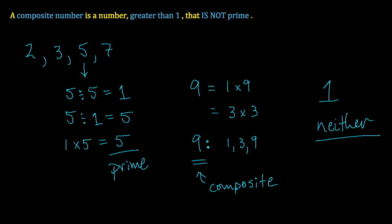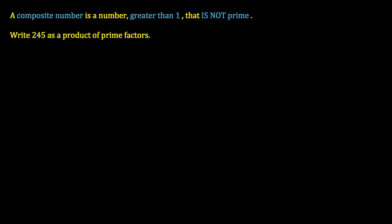Now let's consider some questions where we break down composite numbers into what we would call prime factors. Our question is: write 245 as a product of prime factors. We begin by taking 245 and trying to find two numbers that multiply to give 245. Because 245 ends in a 5, I know it's evenly divisible — it's a multiple of 5. So I'm going to write down my two factors as 5 and whatever 5 times what gives me 245.